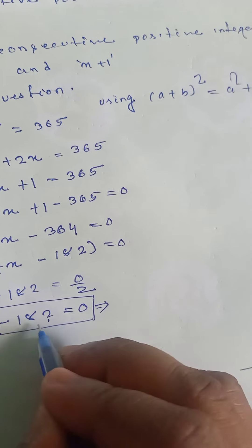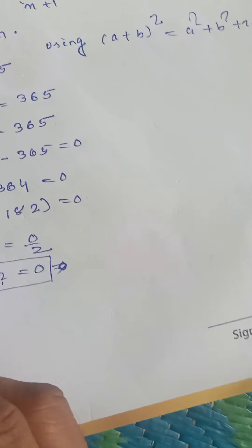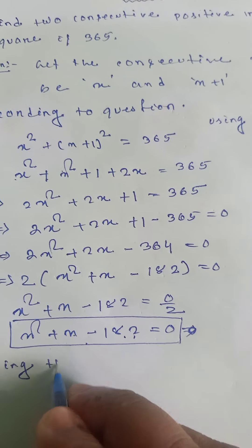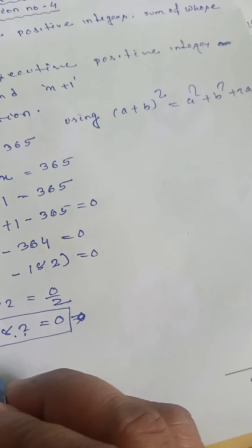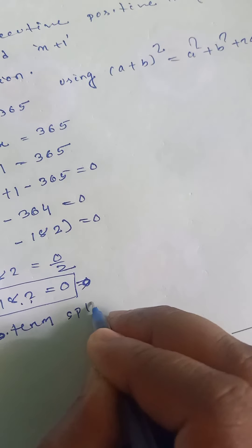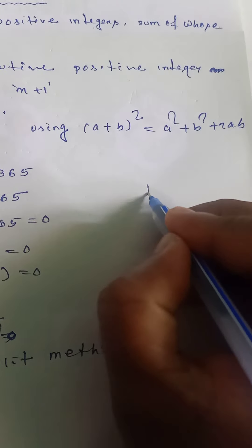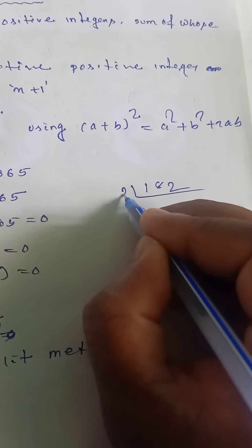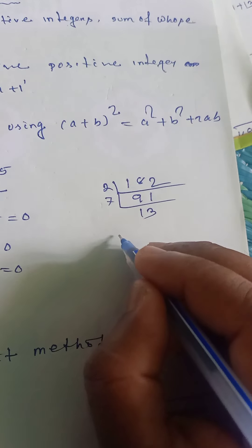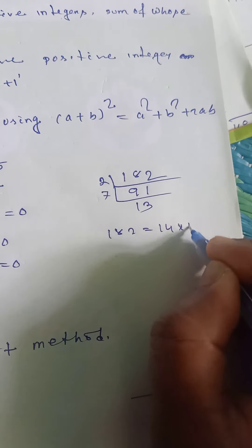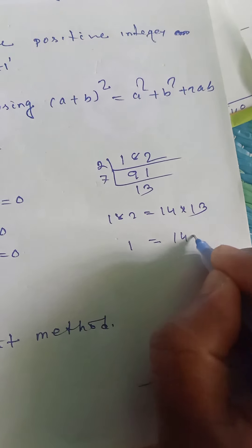Now using the split term method. For 182: dividing gives 91, and 91 divided gives 7 and 13. So 182 equals 14 into 13, and the difference is 14 minus 13 equals 1, which satisfies our requirement.